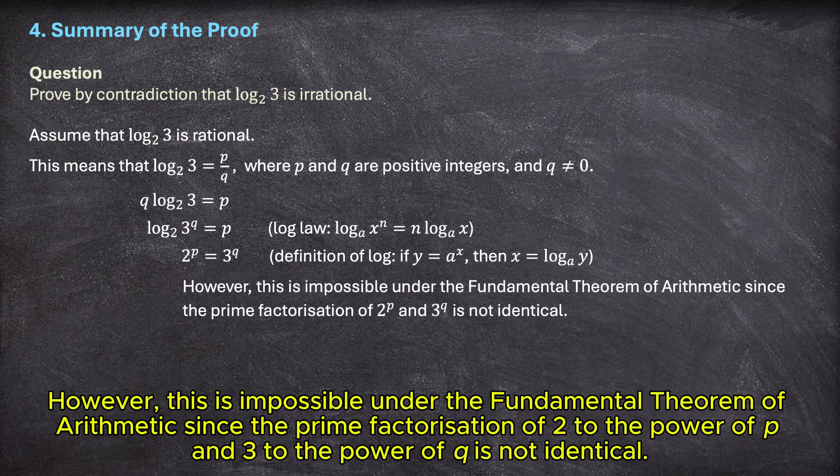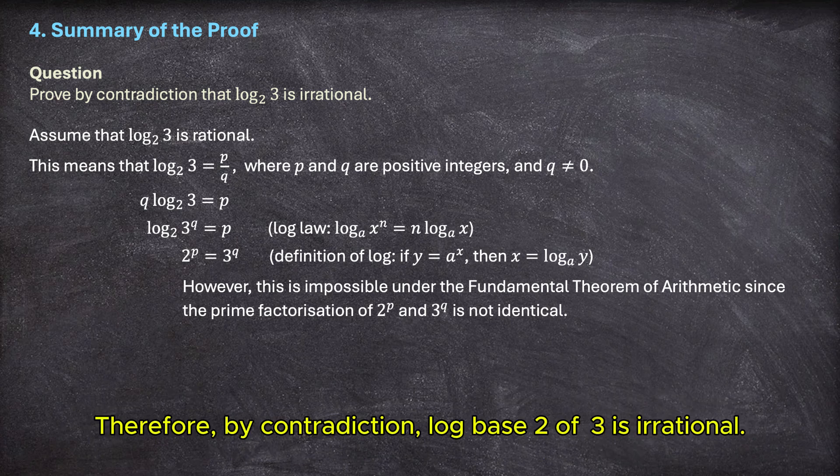However, this is impossible under the fundamental theorem of arithmetic, since the prime factorization of 2 to the power of p and 3 to the power of q is not identical. Therefore, by contradiction, log base 2 of 3 is irrational.